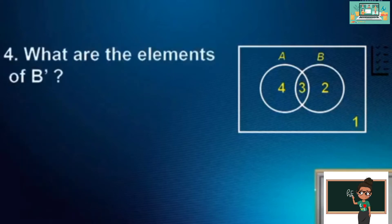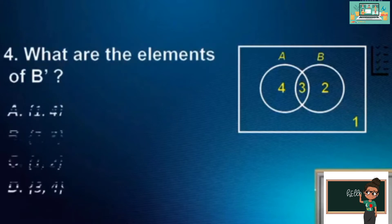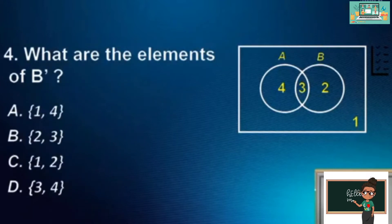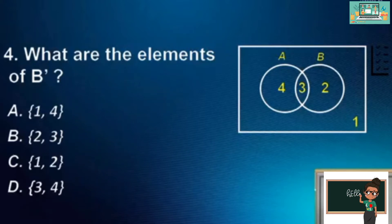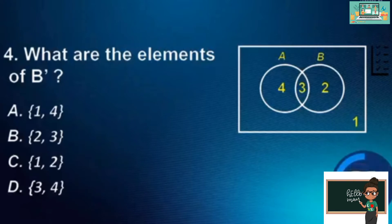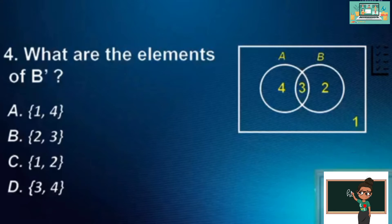Number 4. What are the elements of B complement? A. {1 and 4}. B. {2 and 3}. C. {1 and 2}. D. {3 and 4}. The answer is A.